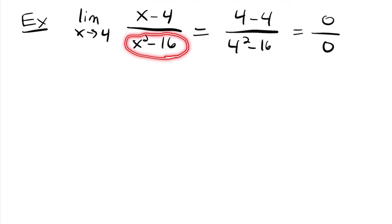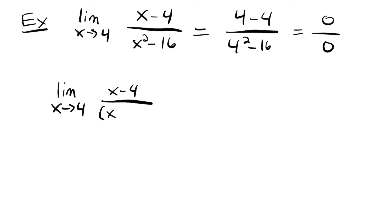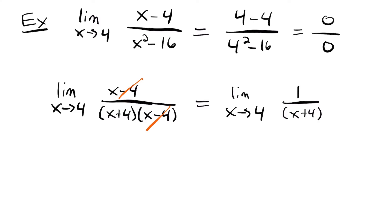We know that x squared minus 16 is a difference of squares since 4 squared is 16. So we factor accordingly and get the limit as x approaches 4 of x minus 4 over (x plus 4)(x minus 4). We can cancel the x minus 4 terms, leaving the limit as x approaches 4 of 1 over x plus 4. Plugging in, we get 1 over 4 plus 4, which is 1 over 8.